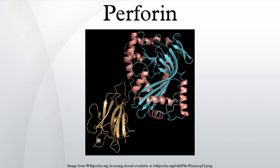Perforin-1 is a protein that in humans is encoded by the PRF1 gene. Perforin is a pore-forming cytolytic protein found in the granules of cytotoxic T lymphocytes and NK cells.